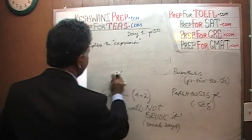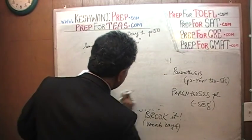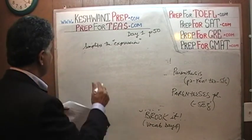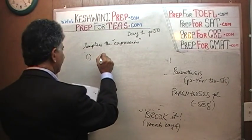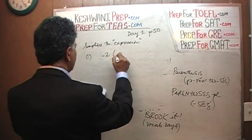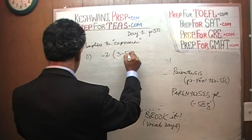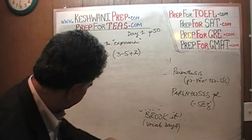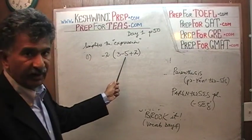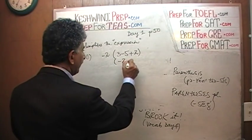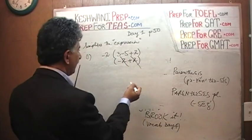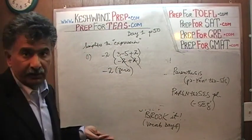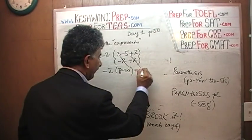Simplify the following expression is the instruction. We are on exercises at the bottom. The very first one is negative two times 3 minus 5 plus 2. 3 minus 5 is negative 2. Negative 2 and positive 2 cancel each other out. So we end up with negative 2 times zero. And zero times anything is zero. So we get just a big fat zero.